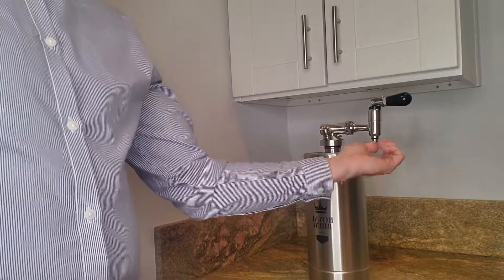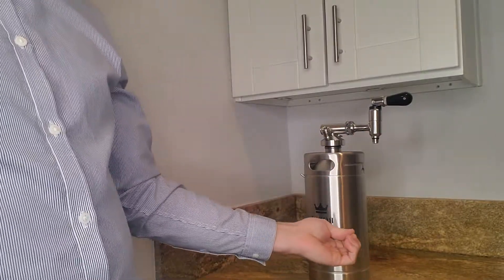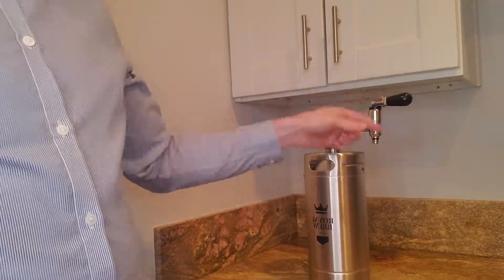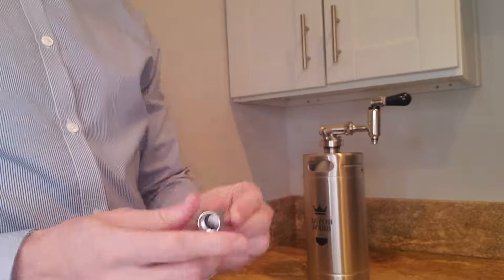So if again, if the fluid was flowing through the faucet when this is off, when the tip is off, that means there was a clog in the tip.